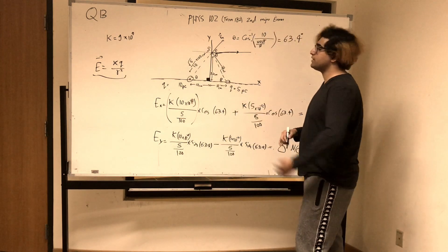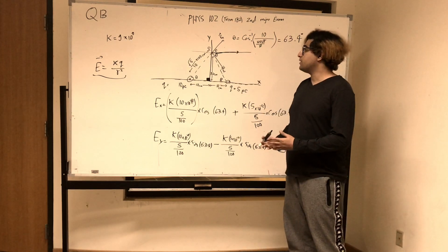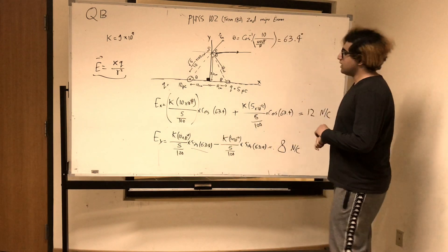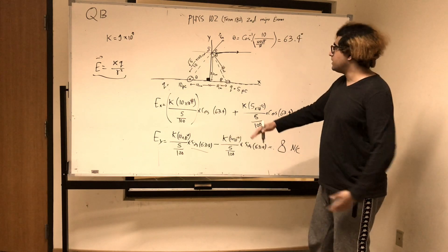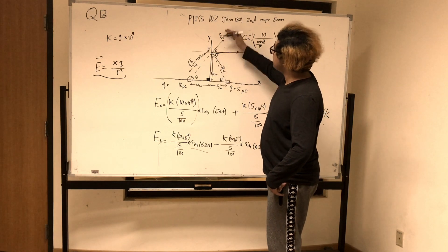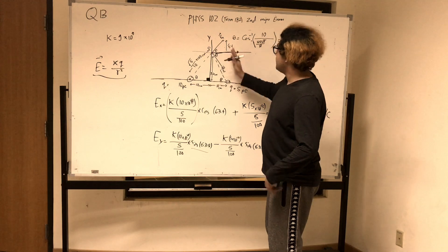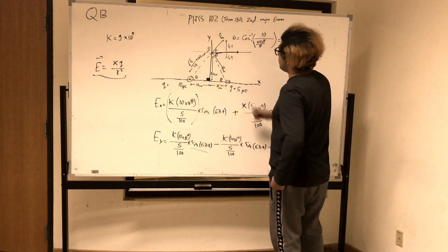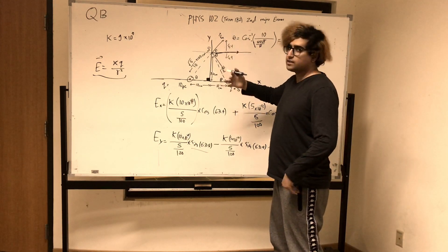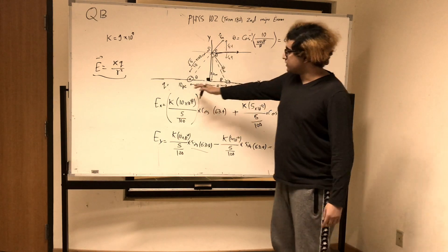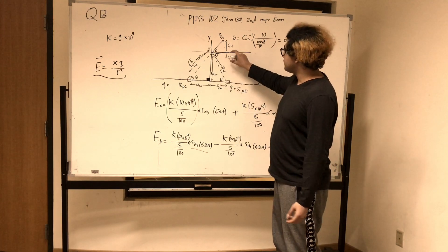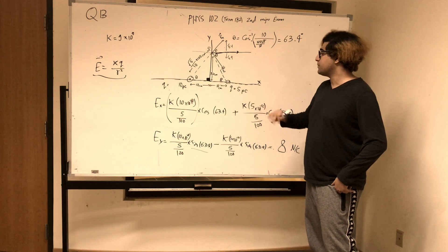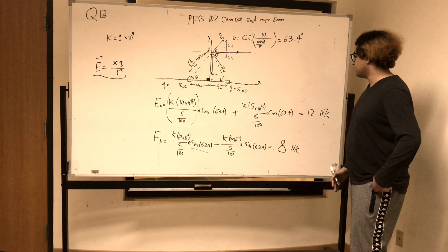Now we've figured out the net electric field in the x-axis. Let's figure out the net electric field in the y-axis. By the same exact logic, use the formula, but this time multiply by sine instead of cosine. In this case, we subtract instead of add, because the y-component of the first electric field is upward and the y-component of the second electric field is downward. We know that this charge is bigger — it's 10 — so the net electric field is going to be heading upward. We subtract the smaller vector from the bigger vector. Just plug this into the calculator and you'll get 8 newtons per coulomb.